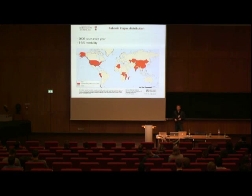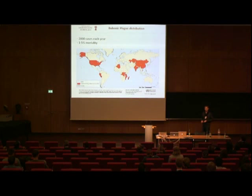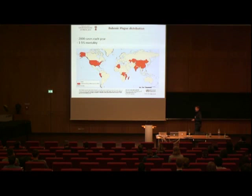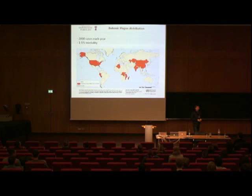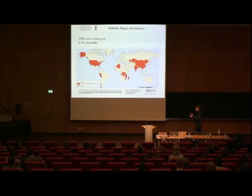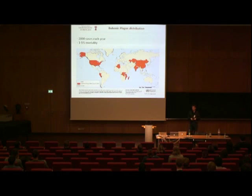Plague is still around today in the world, even though we have antibiotics. It is a rodent disease, so rodents still carry it — especially in the United States, Asia, and Africa, where we have many cases of bubonic plague every year. Just three weeks ago, a person in Oregon got infected and actually died of bubonic plague because it wasn't treated early enough. He was a woodcutter in a remote area who didn't know what he had, and when they diagnosed it, it was too late.